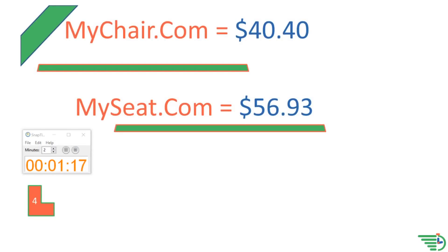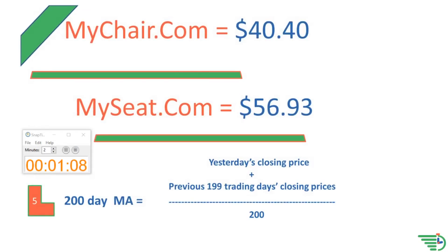Is MySeat.com above the 200-Day Moving Average? We don't know yet, not until we add the 200-Day Moving Average to our stock price. The 200-Day Moving Average is calculated by adding yesterday's close price plus the previous 199 trading days' close price and dividing that total by 200.